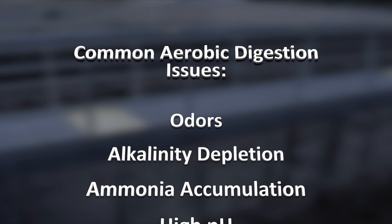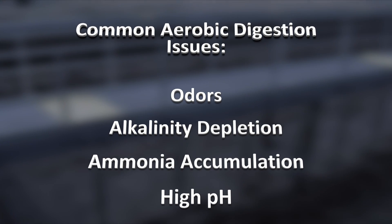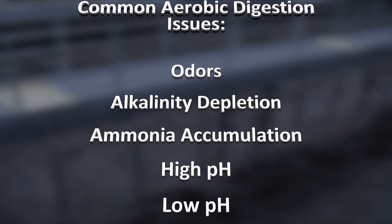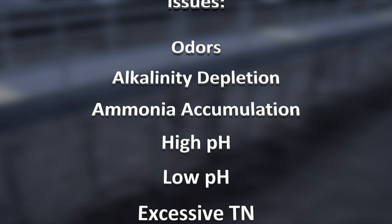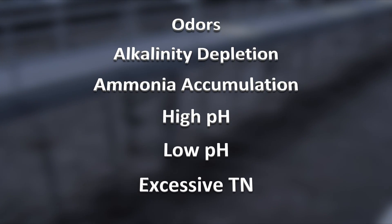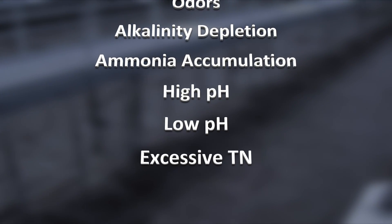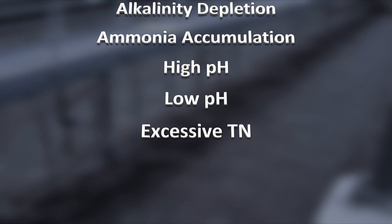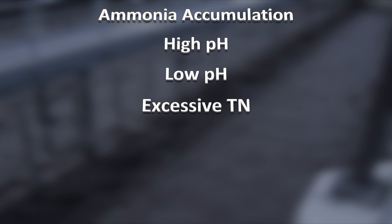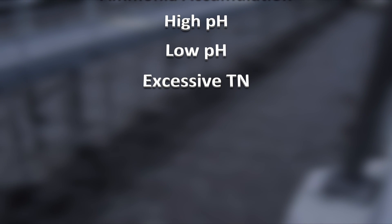If the chemical reactions are not fully understood, issues such as odors, alkalinity depletion, ammonia accumulation, high pH, low pH, and excessive total nitrogen going back to the head of the plant can occur.